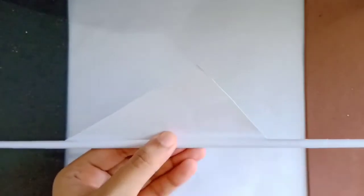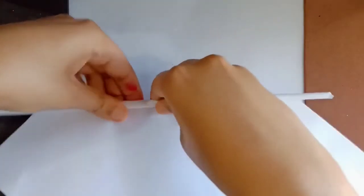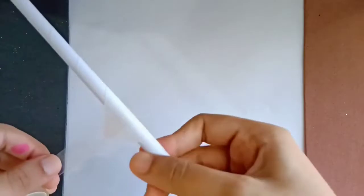Then attach the other paper which we cut at the start. Now, after you've rolled it, tape the ends tightly.